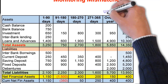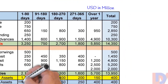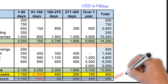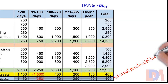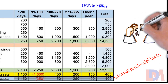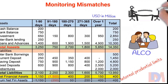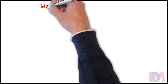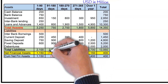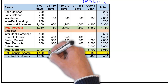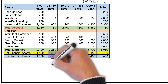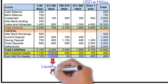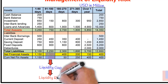Banks monitor their cumulative mismatches, that is cumulative net financial assets, across all time buckets by establishing internal prudential limits with the approval of the Asset Liability Management Committee. In case of higher limits, approval of the board of directors may be required. Liquidity risk refers to the risk of the bank being unable to meet any of its obligations at any point of time. In the given example, the 91 to 180 days time bucket shows that there will be a liquidity shortfall, a liquidity gap.